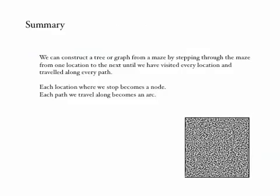So in summary we can construct a tree or a graph from a maze by running through the maze, visiting every single location and travelling along every single path between locations. Each new location we visit becomes a node and each new path we travel along becomes an arc in the tree or graph. When we're finished we end up with a tree or graph representing the maze.